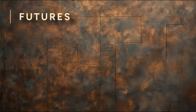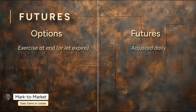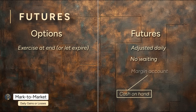Here's one more important detail: mark to market. Unlike options, where you settle everything when the option is exercised, futures are adjusted daily. If prices drop, you lose money that same day; if they rise, you get paid that day. You don't wait until expiration — your gains and losses are settled in real time, every trading day. That means you need cash on hand in what's called a margin account to cover those swings.